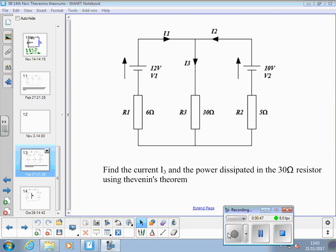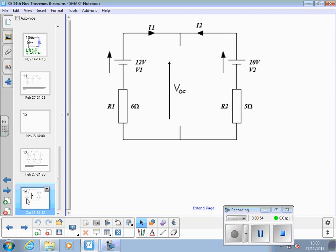The problem says find the current I3 and the power dissipated in the 30-ohm resistor using Thevenin's theorem. So what's the first thing we need to do in the process? Take out the resistor of interest. So take the 30-ohm resistor out of the circuit and leave two open terminals. I want to encourage the drawing of circuit diagrams of each part of the process as you go along, because that's the best way to get this right.